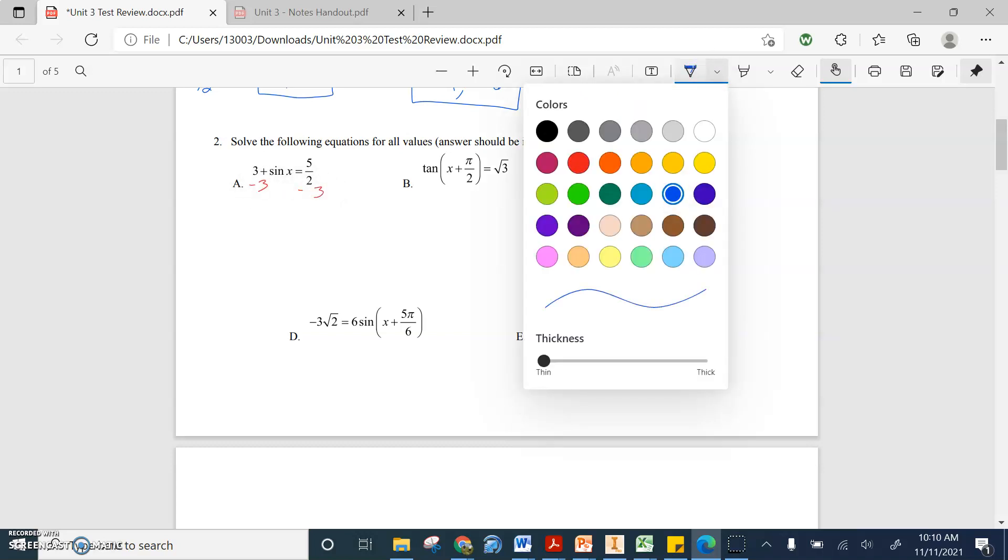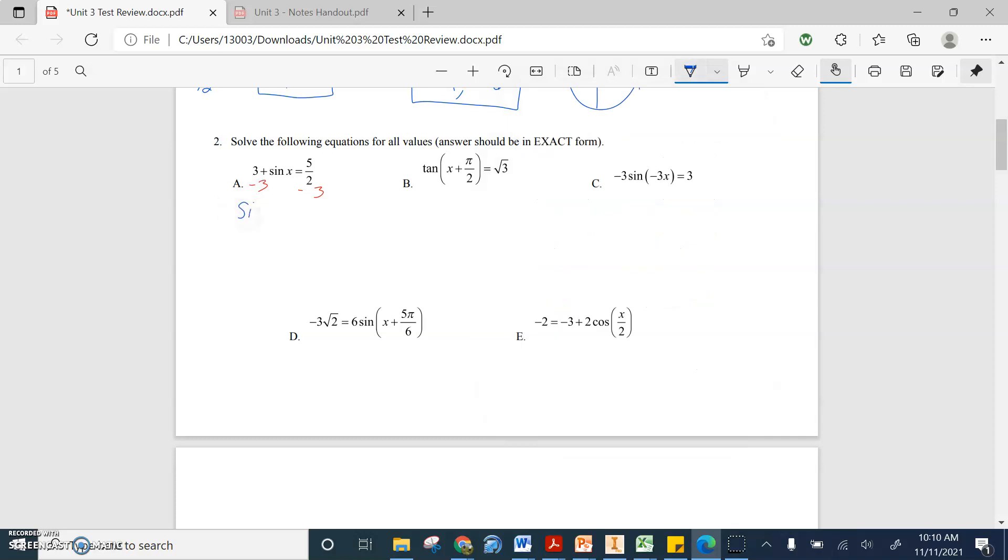And what we get is sine x equals, now five halves is two and a half, minus three you get negative one half. So step one is getting sine by itself.